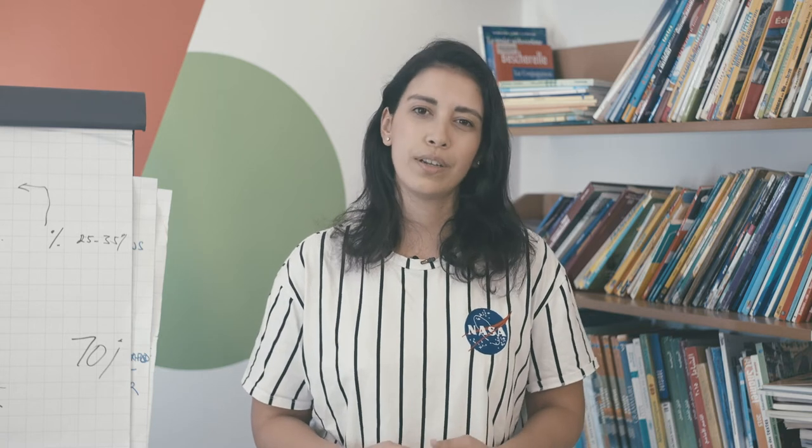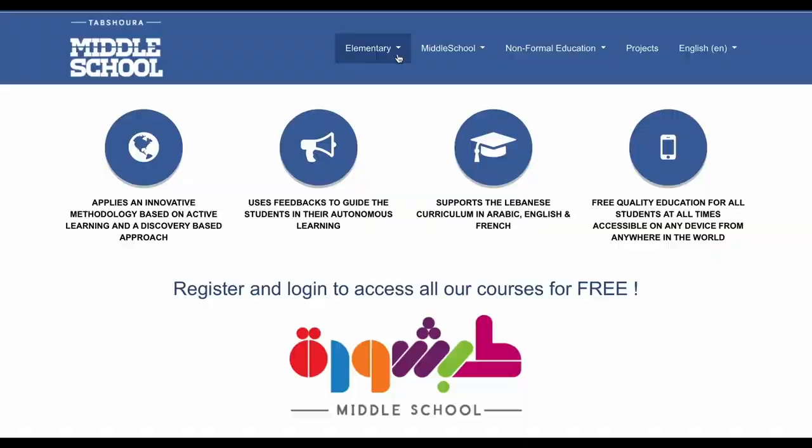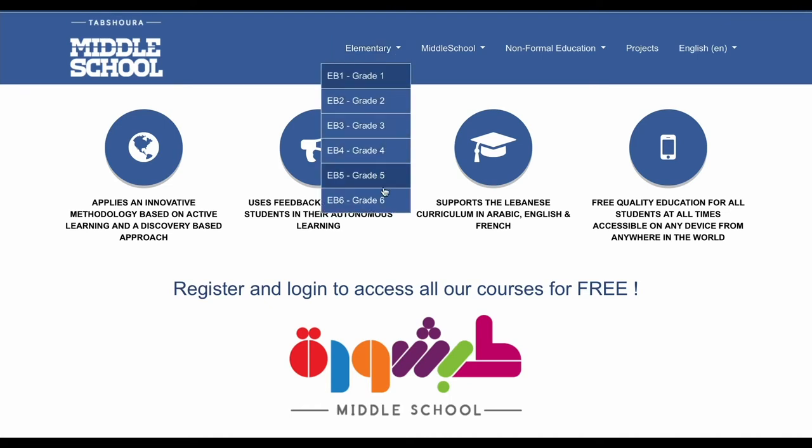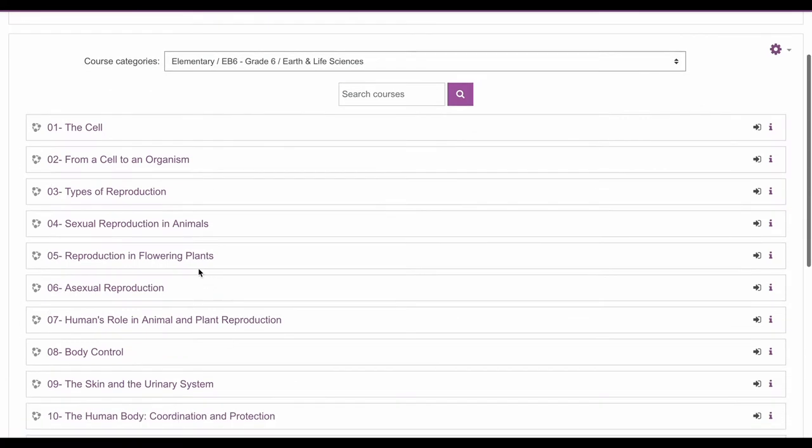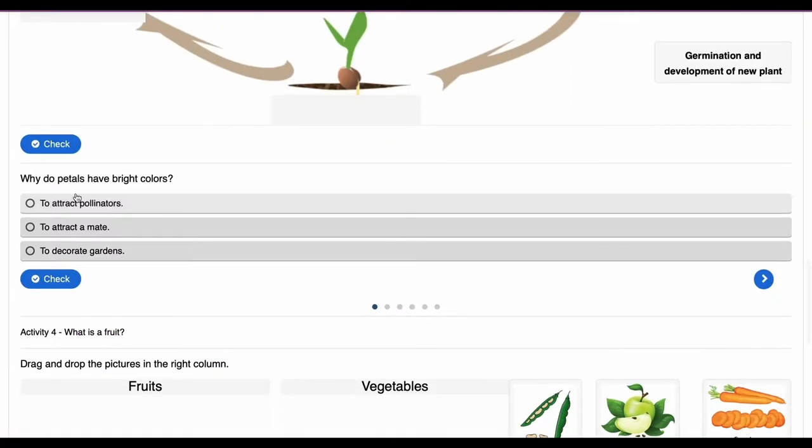At Lebanese Alternative Learning, we decided to take the lead. Since 2017, we launched a platform called Tabshura. It is an interactive digital platform that is aligned with the Lebanese curriculum from kindergarten to grade 9, covering all subjects.